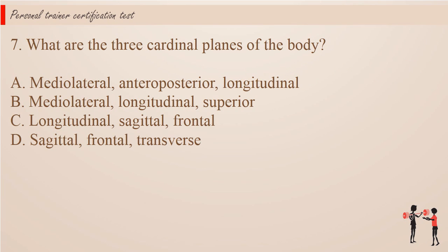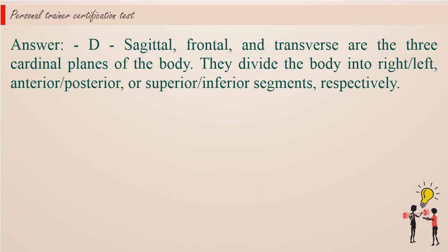Question 7. What are the three cardinal planes of the body? a. Mediolateral, anteroposterior, longitudinal. b. Mediolateral, longitudinal, superior. c. Longitudinal, sagittal, frontal. d. Sagittal, frontal, transverse. Answer: d. Sagittal, frontal, and transverse are the three cardinal planes of the body. They divide the body into right, left, anterior, posterior, or superior and inferior segments, respectively.